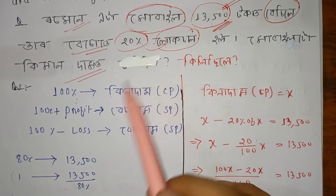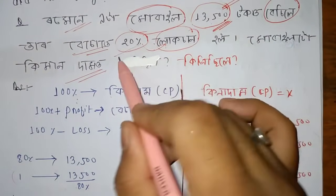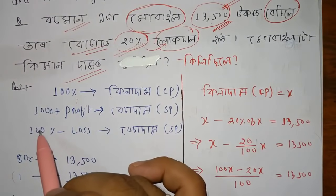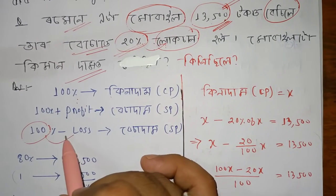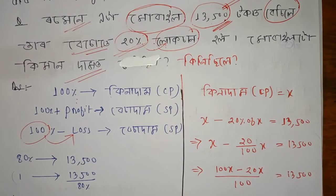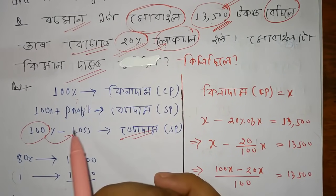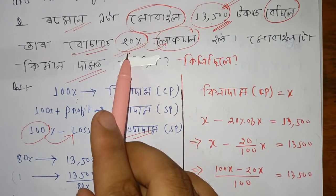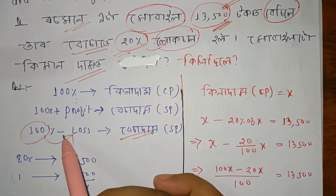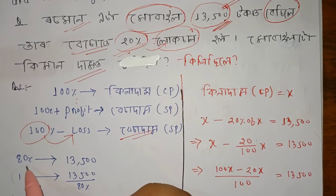There is a loss of 20%. So 20% is a loss. Since there is a 20% loss, that means we subtract 20% from 100%, so from 100% minus 20%, we get 80%.